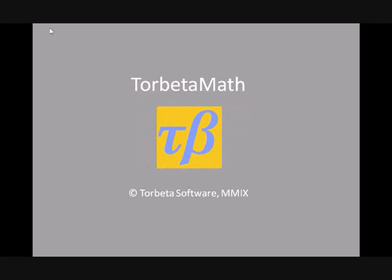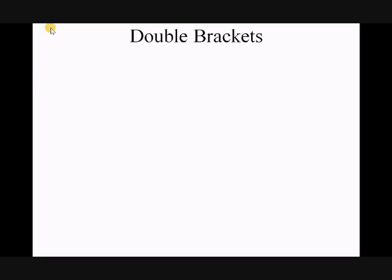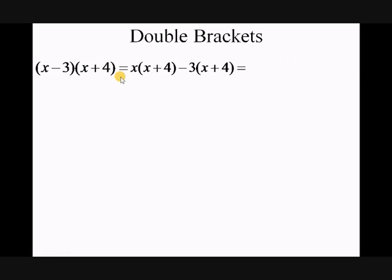Welcome to Torbeta Math: expanding double brackets. Let's have a look at the first example: (x minus 3) in brackets times (x plus 4). What we're going to do here is multiply the x by the bracket (x plus 4), and also multiply the minus 3 by the bracket (x plus 4) as well.